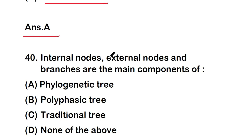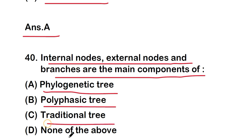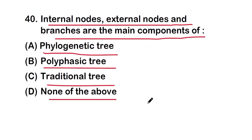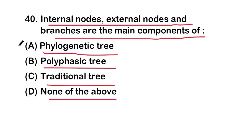The last question: internal nodes, external nodes, and branches are the main components of a phylogenetic tree, polyphasic tree, traditional tree, or none of the above? The right answer is option A — phylogenetic tree. These are all 20 questions of this Part 2 video. Thank you for watching.